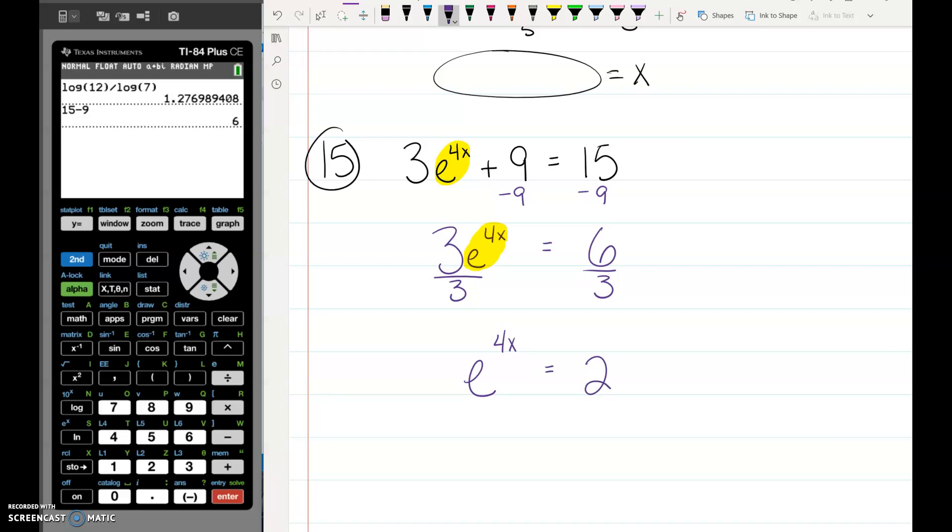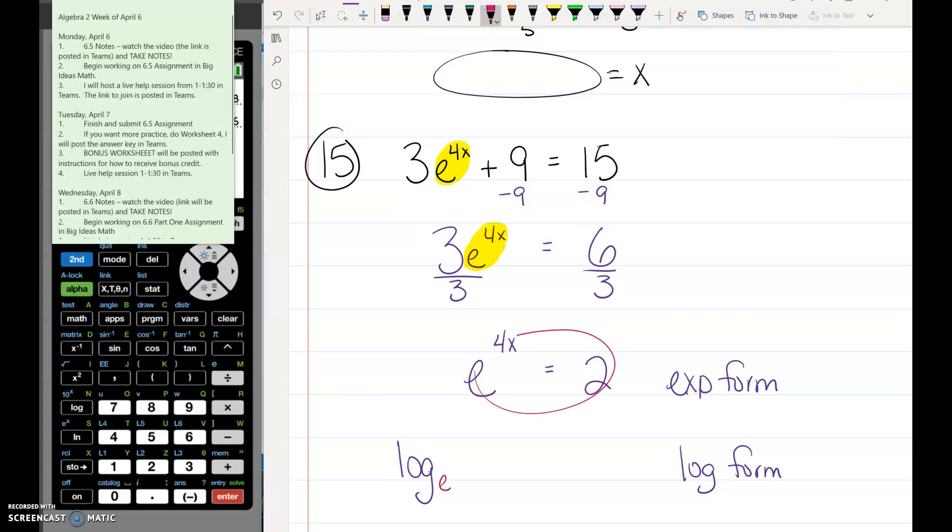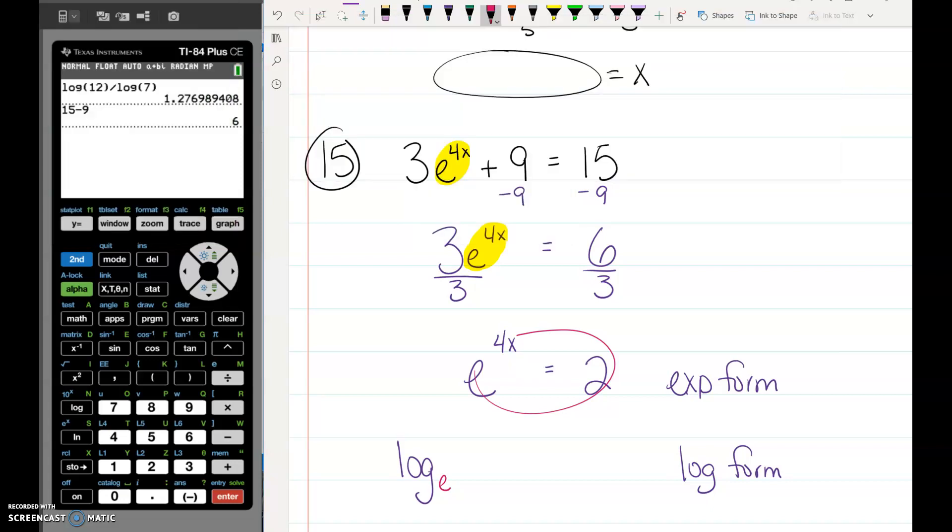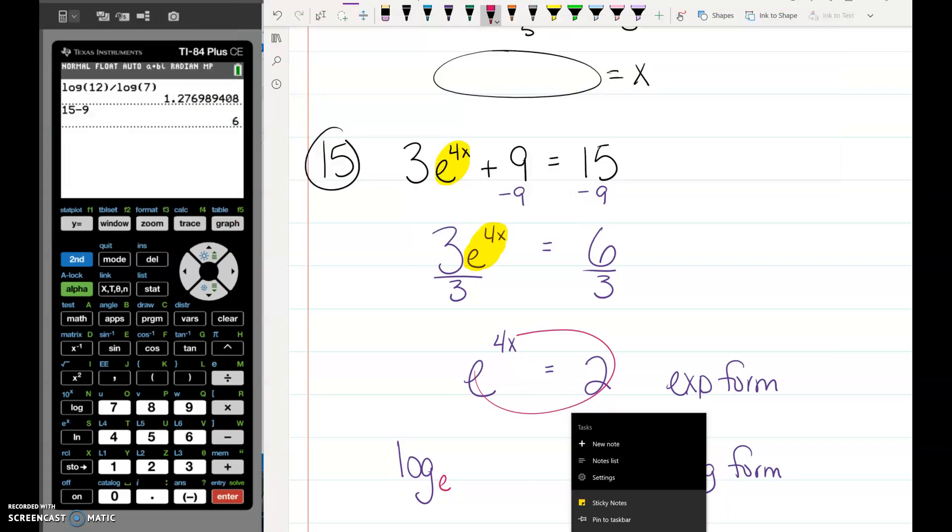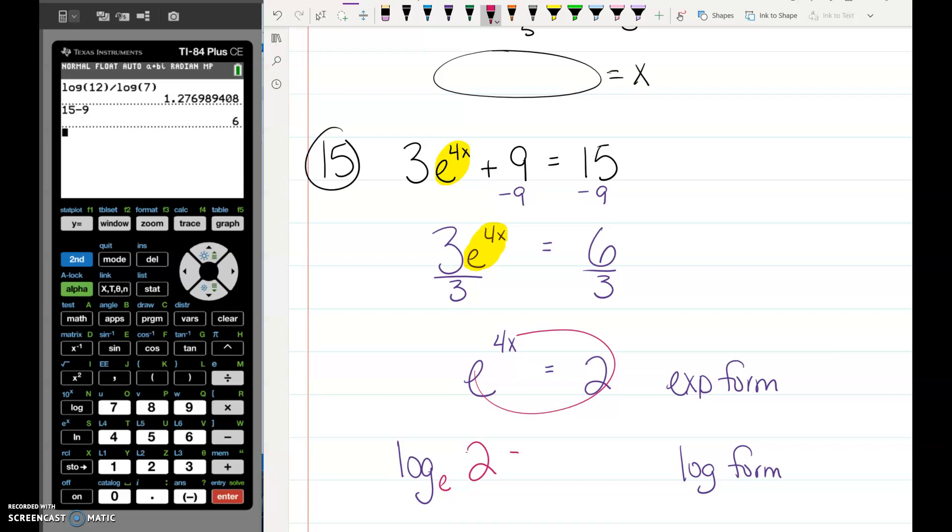We're now stuck. x is in the exponent. We are stuck. This is exponential form. We want to change it to logarithmic form. So we want to start with log, and then we need to know what order to put things. So, log base e of 2 equals 4x.